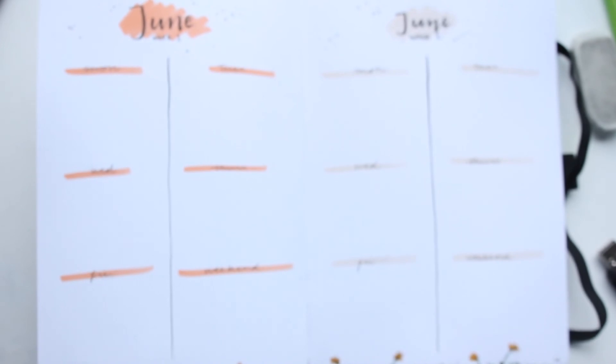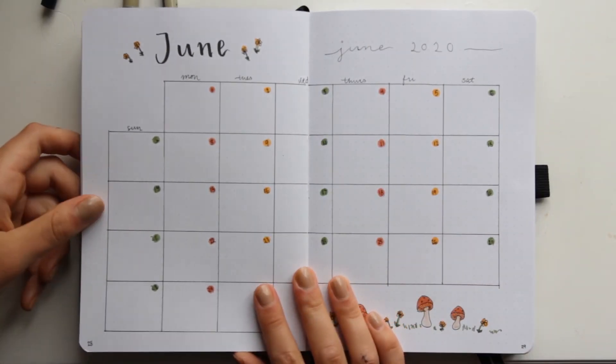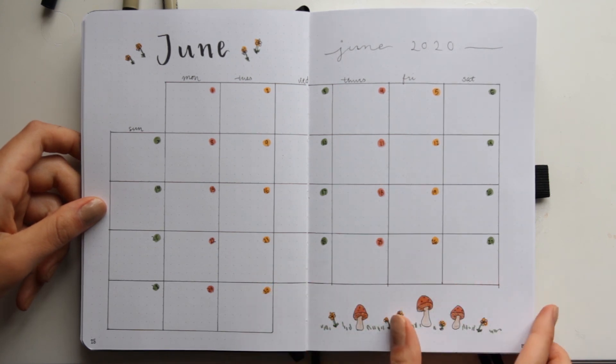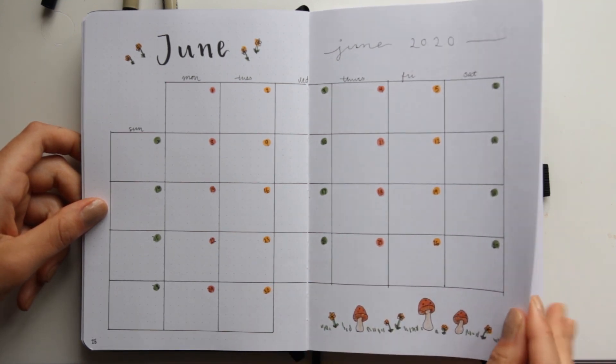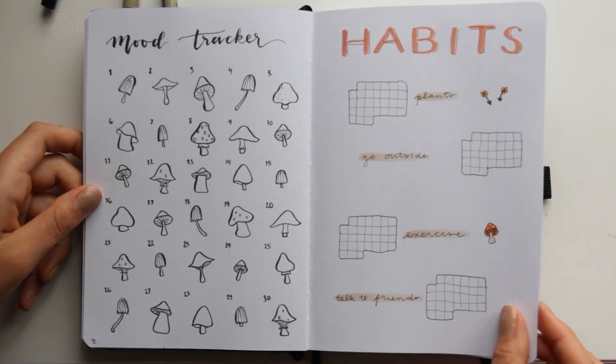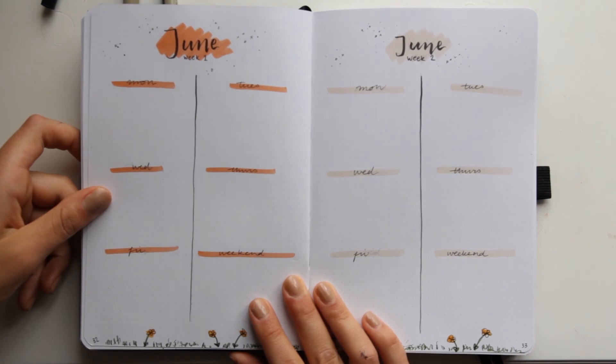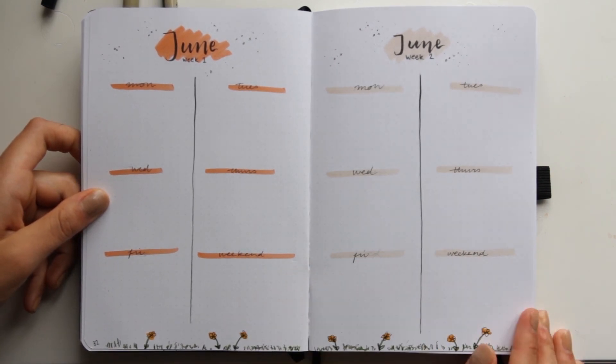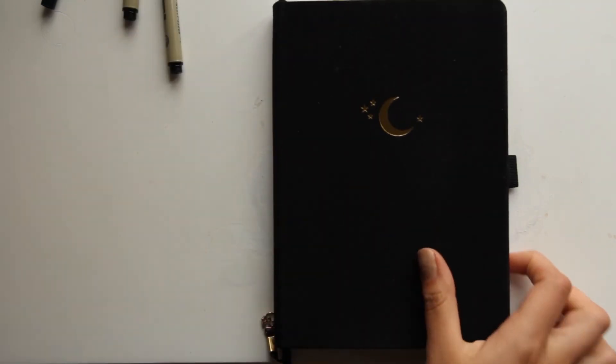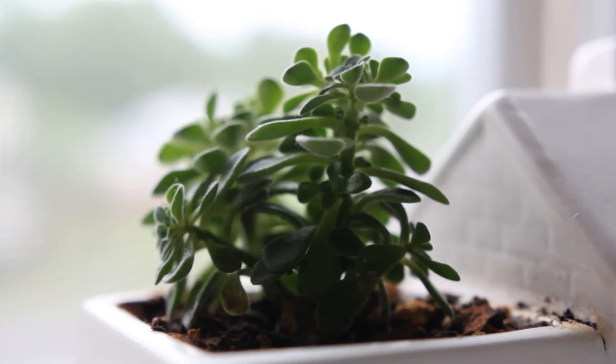And here's my final flip through of the month. And I really love how this turned out. It is so cute. And I'm obsessed with the mushrooms. Thank you so much for watching this video. Please let me know if you want more bullet journaling content. Subscribe to my channel, like this video if you support an entrepreneurial queen. Thank you so much for watching. I'll see you next time. Bye-bye.